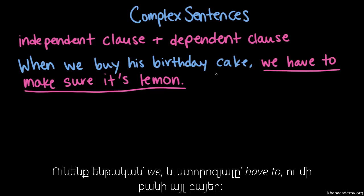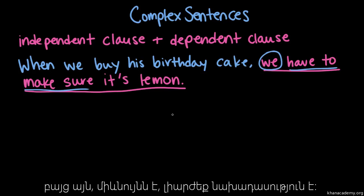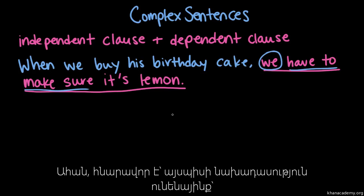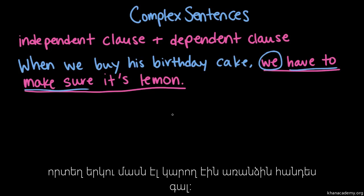We've got a subject — 'we' — and a verb — 'have' — and well, we have multiple verbs; 'have to make sure.' So the sentence is relying on some information that's not provided, but it does still stand as its own sentence. Like we could have a sentence before it that's 'we're gonna go buy a birthday cake, we have to make sure it's lemon' — those can be two separate sentences.